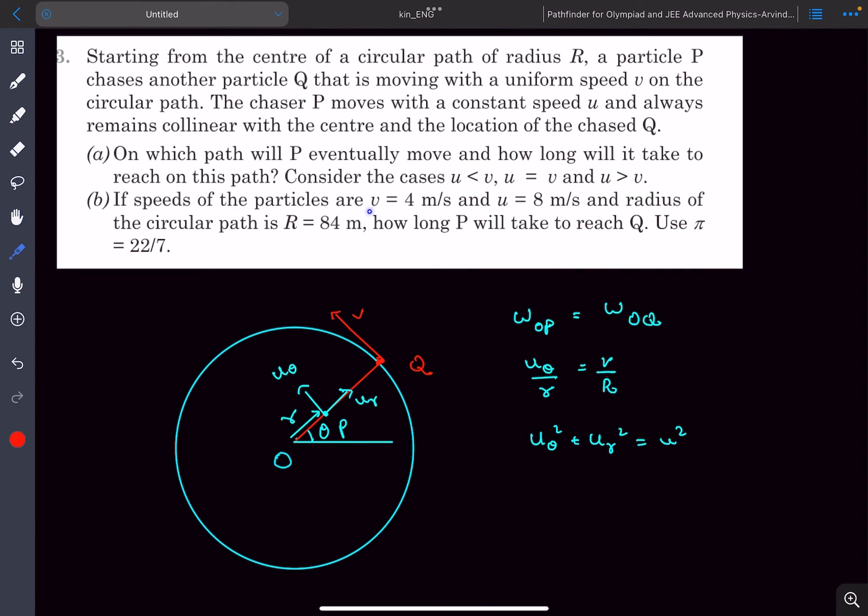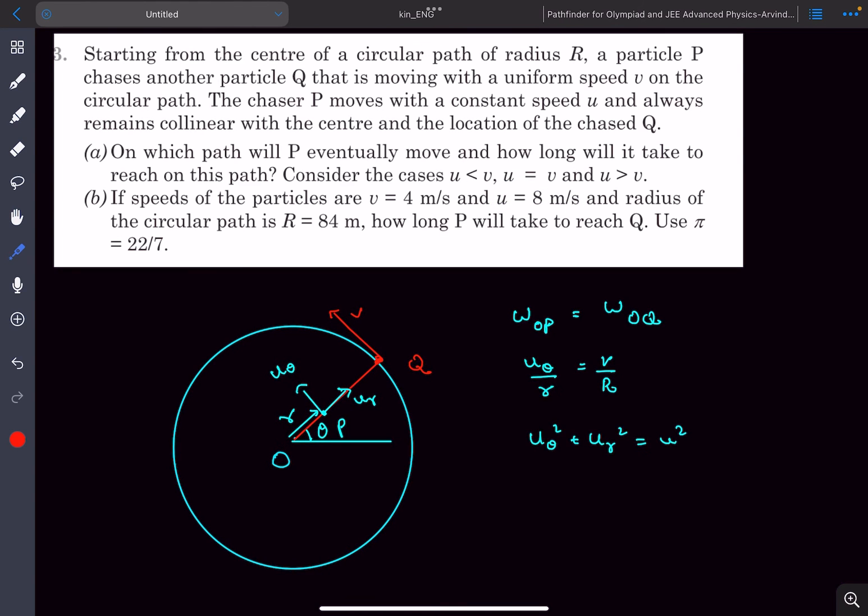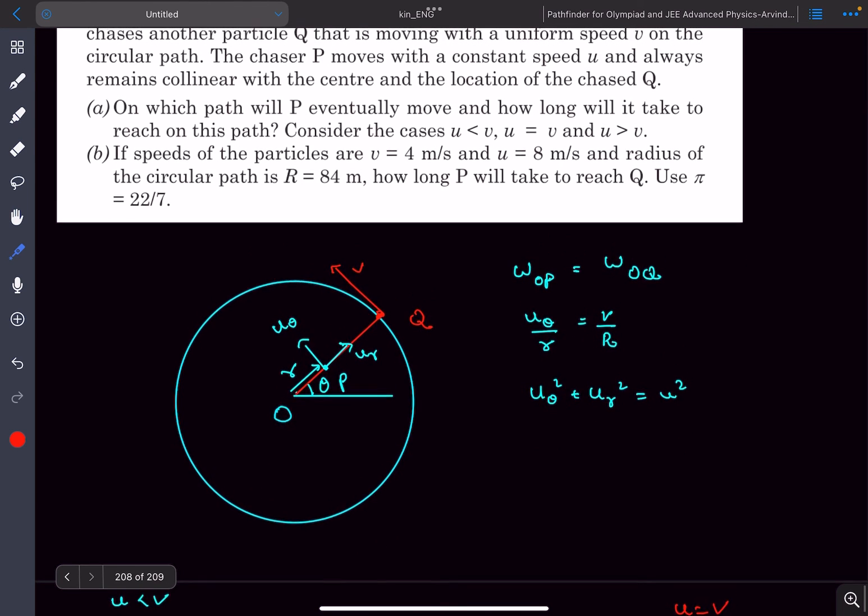So in the second problem we've been given that v is 4 meters per second and u is 8 meters per second. u is greater, so the particle will reach the point Q after some time and we have to find that time.